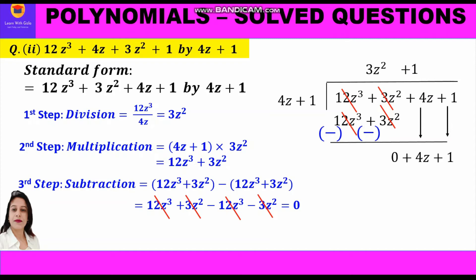We write 1 on top just next to 3z². Now the second step, multiplication: 4z plus 1 into 1 gives 4z plus 1.